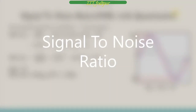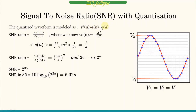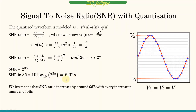The signal-to-noise ratio with quantization: the quantized waveform is modeled as S(n) + Q(n), so SNR equals the mean square value of S divided by the mean square value of noise, which is S²/12. The mean square value of the signal is given by M² times 1/(2B). Assuming VH and VL are equal at ±V, this gives V²/3. Taking the ratio of V²/3 to S²/12, it comes out to (2B/S)². Since 2B = S · 2^N, SNR equals 2^(2N), or in dB: 10·log(2^(2N)) = 6.02N dB. So SNR increases by approximately 6 dB with every additional bit.